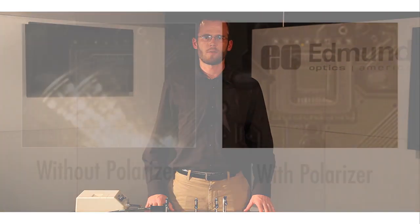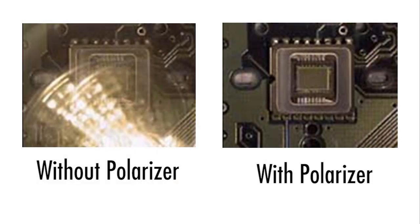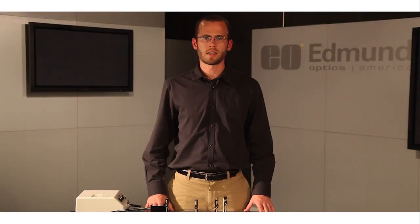Imagine you are trying to take a picture of a microchip that is protected by a window. The light from the flash reflects off the window and destroys the image. By using a polarizer, we eliminate the glare.